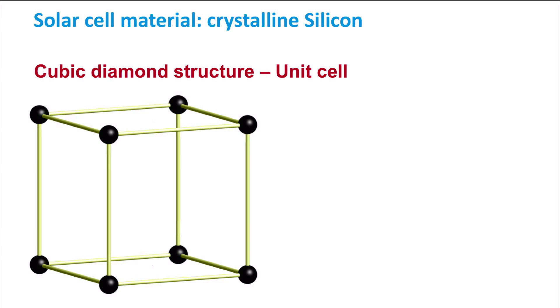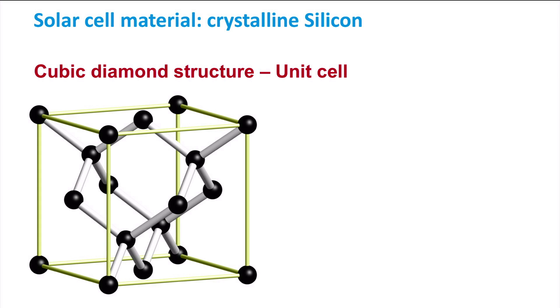This diamond structure is described as a face-centered cubic lattice, which is a cubic lattice with atoms placed at the center of each face as shown here. The cubic diamond structure has 4 more atoms in the unit cell.